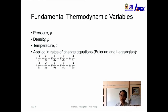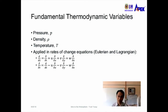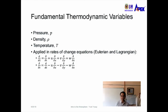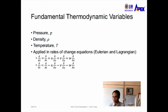Pressure is denoted as lowercase p in this course. Density is denoted as rho — which looks like a small e without the tail. Temperature is capital T. We can apply rates of change to examine how fast these thermodynamic variables change with time.